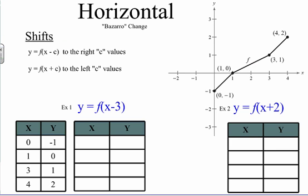The same thing can be said about horizontal transformations. A horizontal rigid transformation moves values to the right or left. When you have x minus c inside the function, you are moving things to the right by c. When you are adding c to x, you are moving values to the left by c. I call this a 'bizarro change' because it seems like the opposite of what it should be. When you added to a vertical transformation you moved up, subtracted and moved down. But inside the function, subtracting moves right and adding moves left — which seems bizarre.